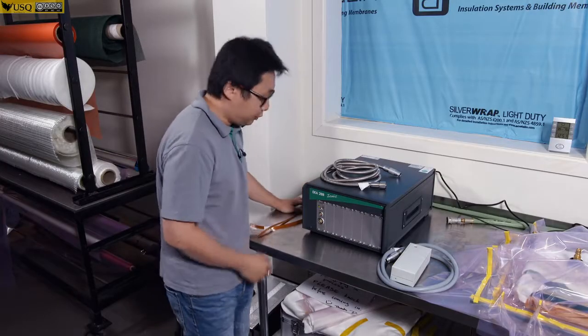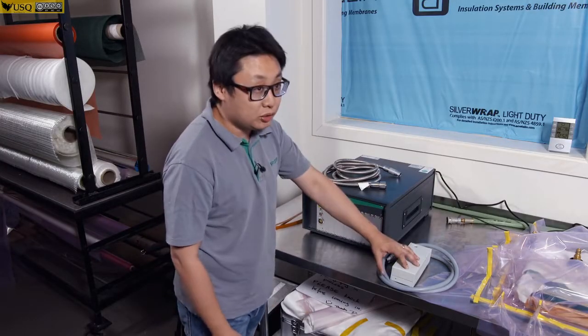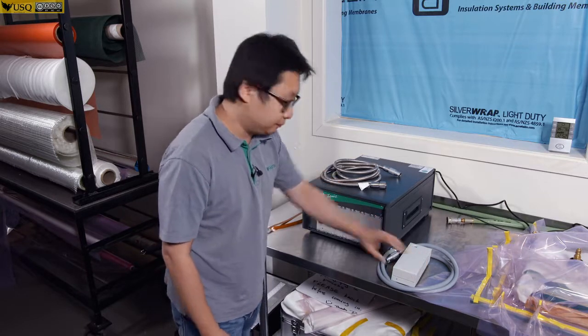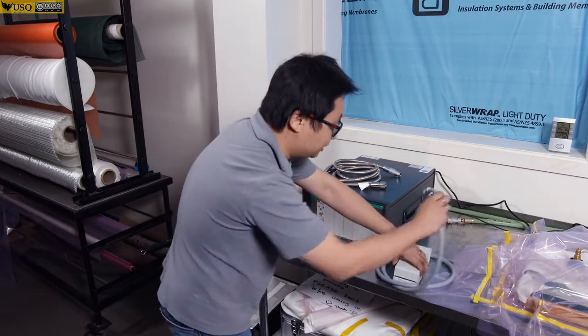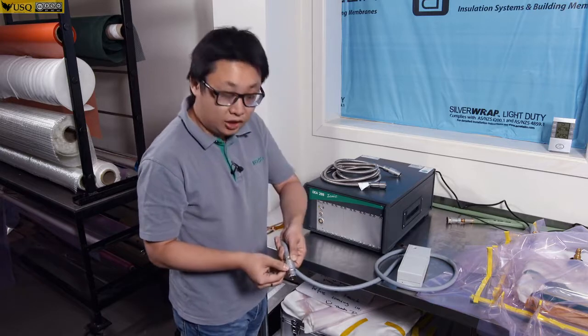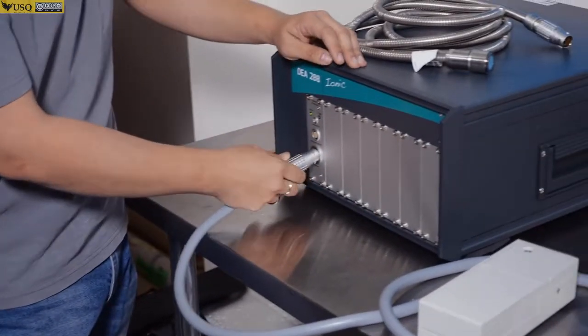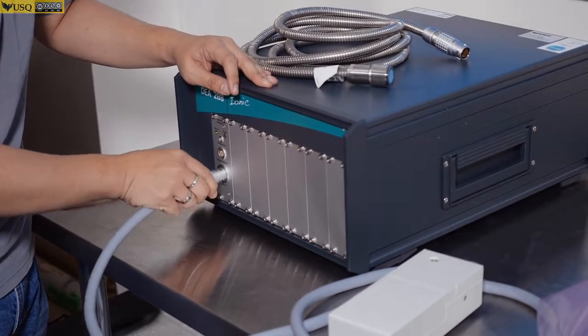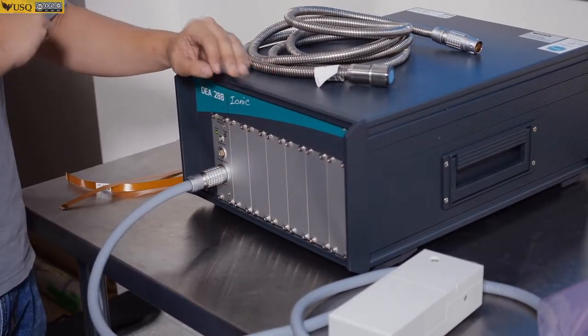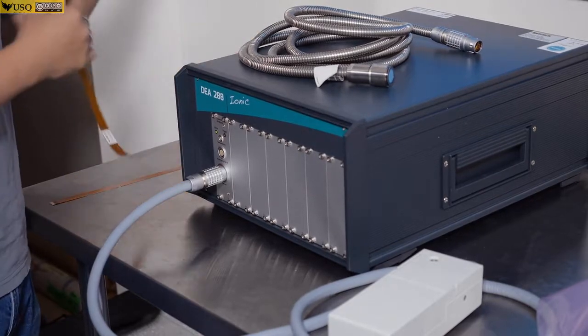To use a disposable sensor, we will need to use the adapter box. If you look at the adapter box, it comes with a connector which has a red dot in front. We connect the adapter box to the instrument and you will hear a click.